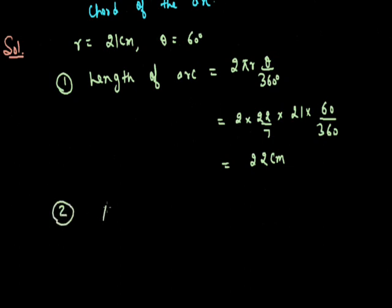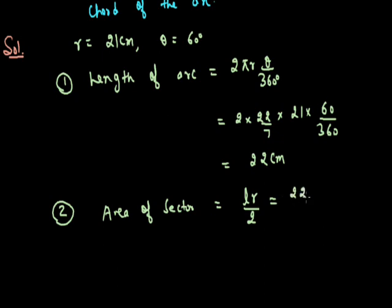Second, find the area of the sector. Using the relationship between area of sector and length of arc: A = Lr/2. The arc length is 22 cm and radius is 21, so A = 22 × 21/2 = 11 × 21 = 231 cm².